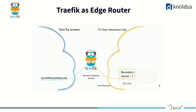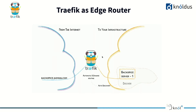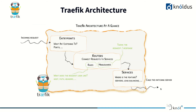Traefik also acts as an edge router — it sits on the edge of your system, and whenever a request arrives it automatically forwards it to your infrastructure. The server processes the request and gives the response to Traefik, which forwards it back to the client.